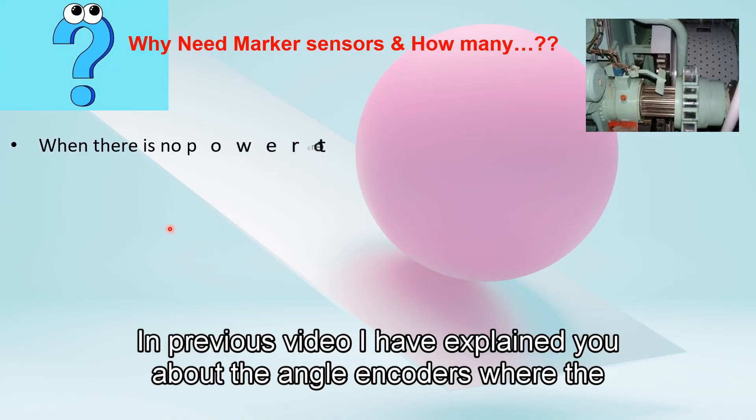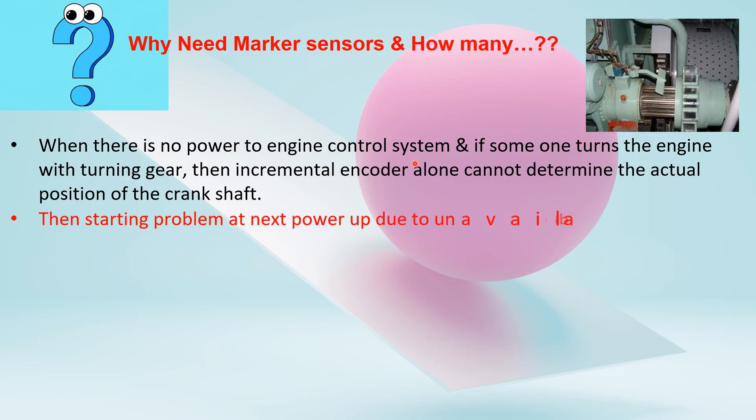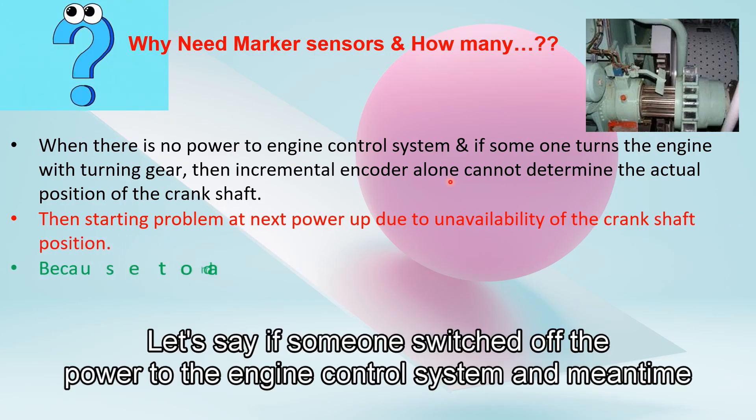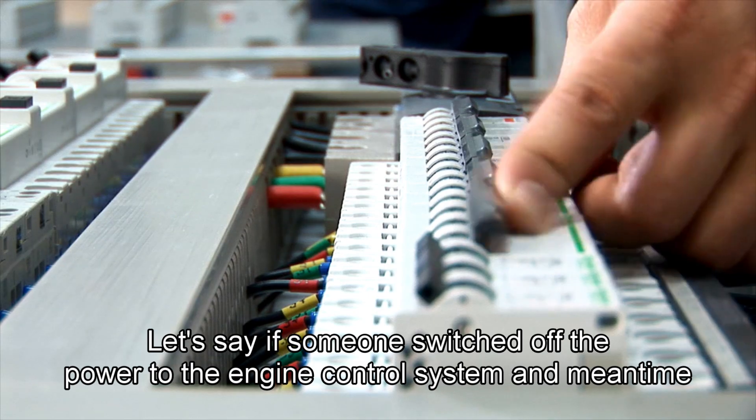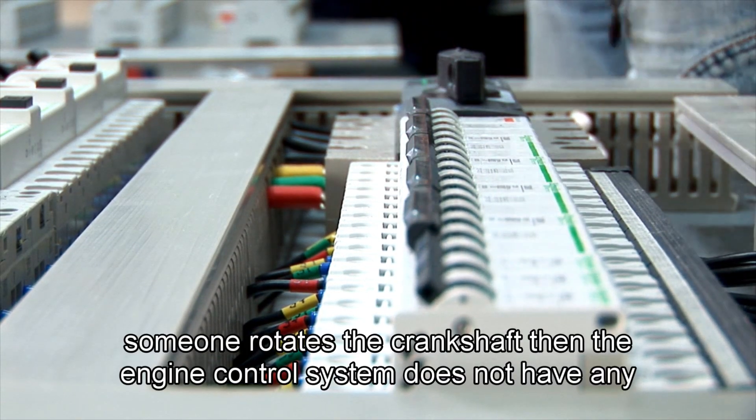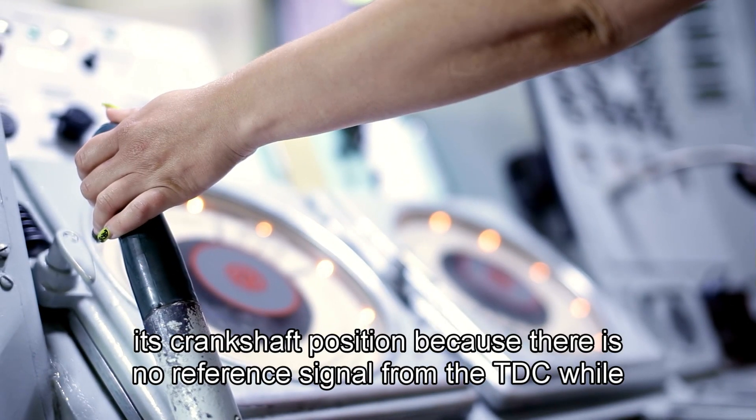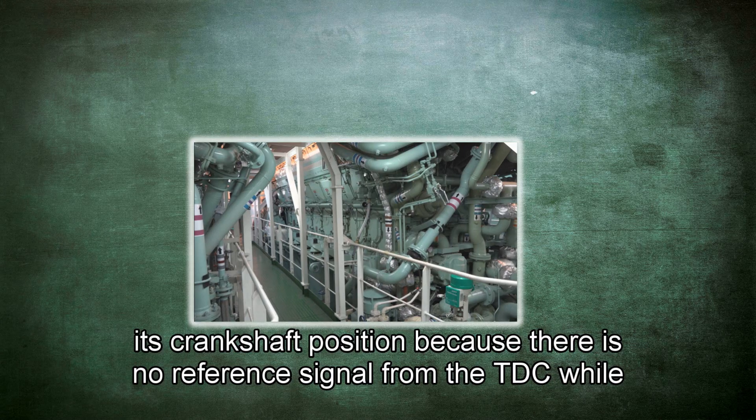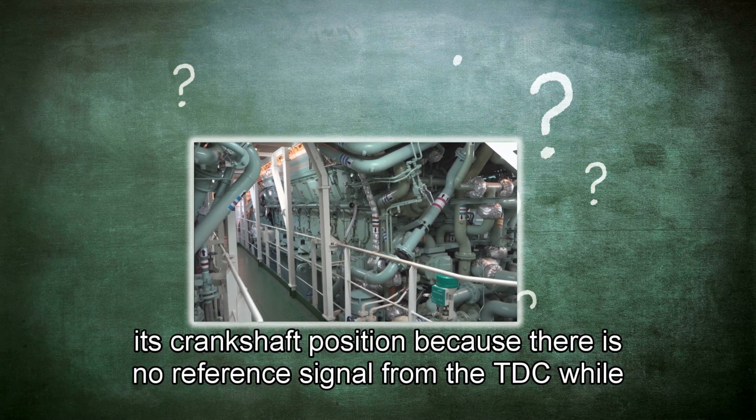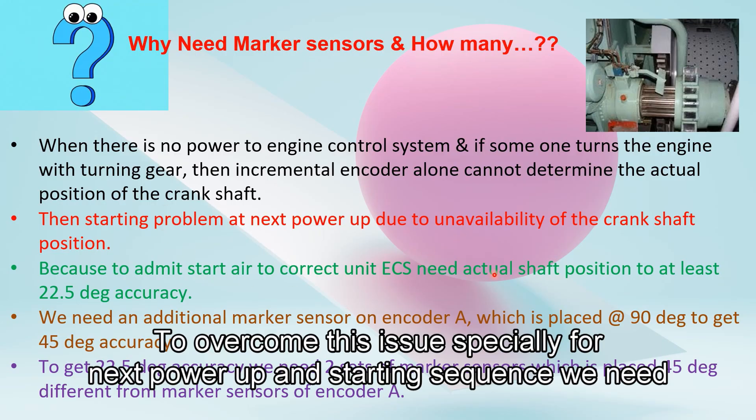In the previous video, I explained about the angle encoders when the engine is powered on and operational, measuring the angle. If someone switches off the power to the engine control system and meanwhile someone rotates the crankshaft, then the engine control system does not have any clue about its crankshaft position because there is no reference signal from the TDC while the engine was turning.